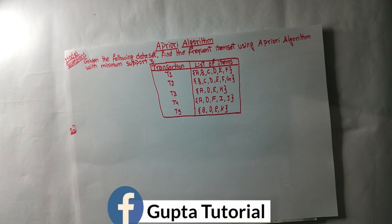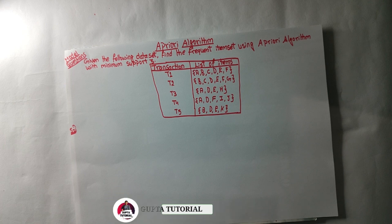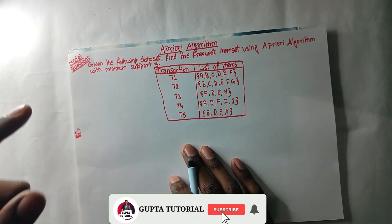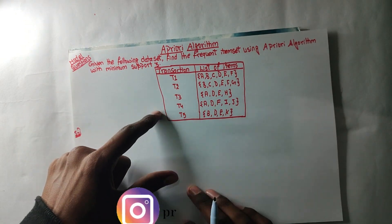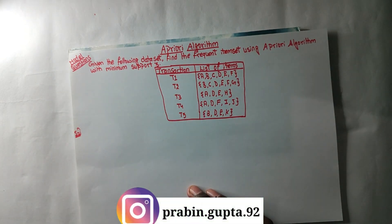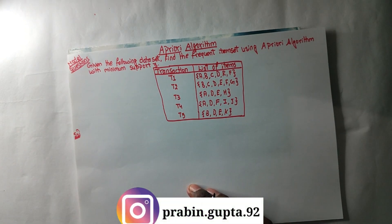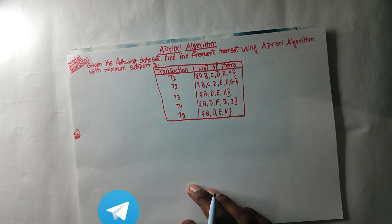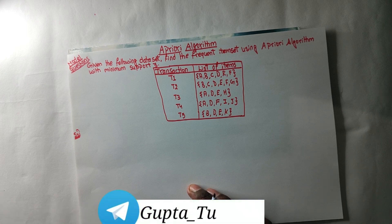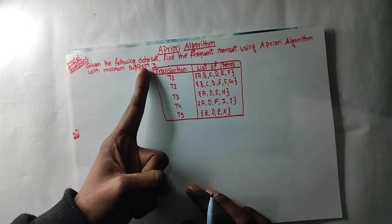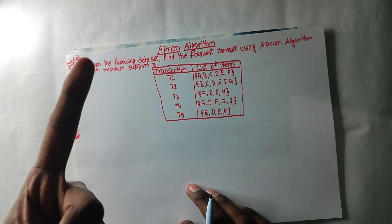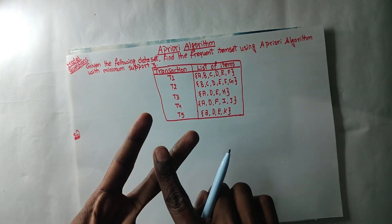Hey guys, welcome back to my channel. In this video, you will find two examples here which is a model question. You will find the model set, the test question, and the example. You can find Video number 1 in the playlist. You will find the frequent item set or the association rule.